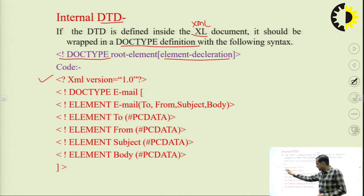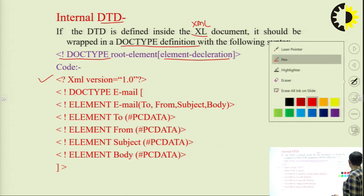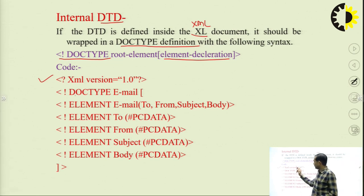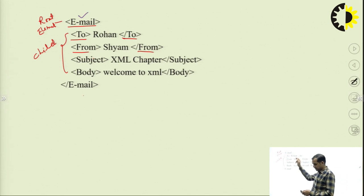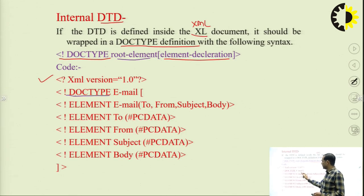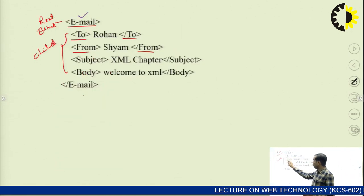First, we use DOCTYPE to start the XML document declaration. Then we specify the root element — here it is 'email'. Inside the brackets, we declare the child elements: 'to', 'from', 'subject', and 'body'.